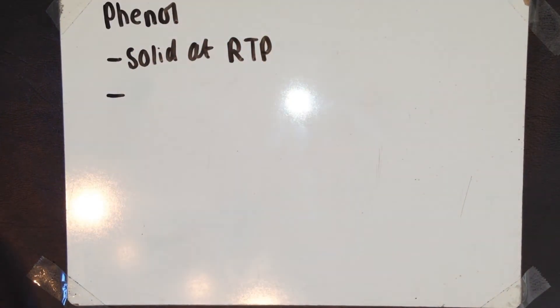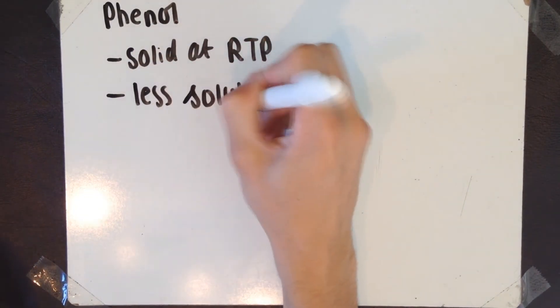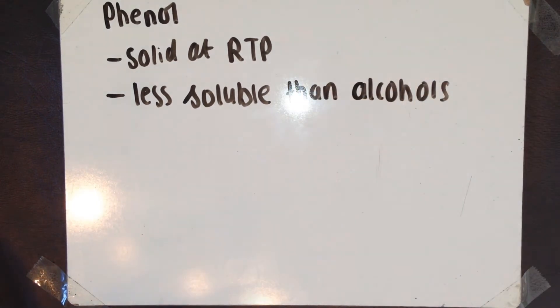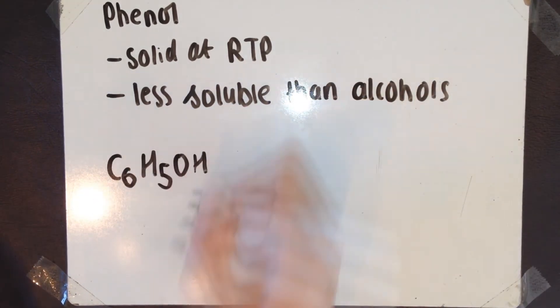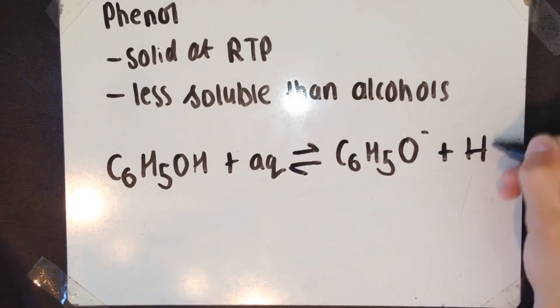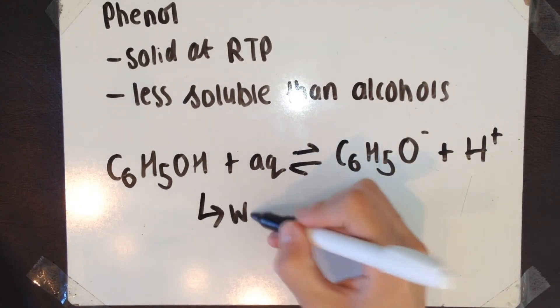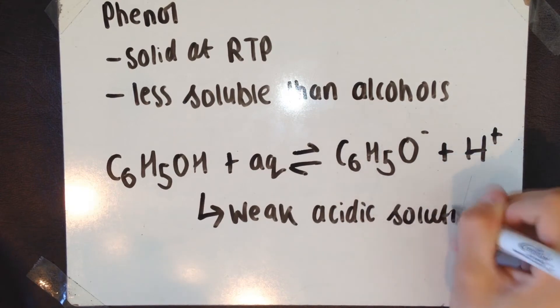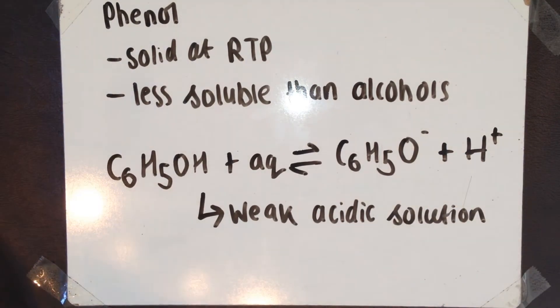I'm quickly going to tell you about phenyl, the simplest of the phenyls. Phenyl is solid at room temperature and pressure. Phenyl is less soluble than alcohols. Remember, phenyl is not an alcohol. When dissolved in water, phenyl forms a weak acid solution by losing the H-plus ion from the OH group.